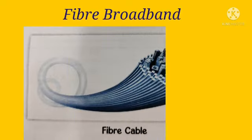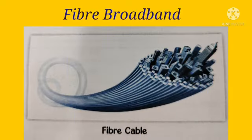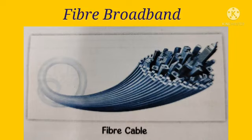Fiber broadband uses optical fiber cables that use light instead of electricity to transfer data signals, while regular broadband uses copper cables that depend on electricity to transfer data signals. However, optical fiber cables are too expensive to install.